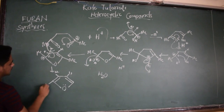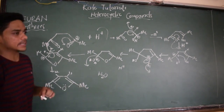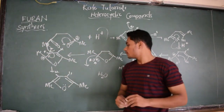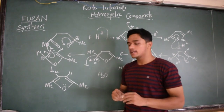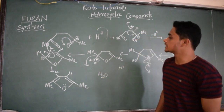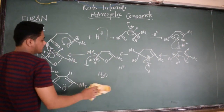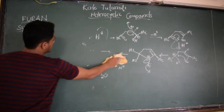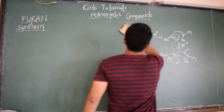It became neutral — oxygen, oxygen, oxygen — and this is the derivative of furan: 2,5-dimethylfuran. In this way we prepare furan by taking a 1,4-dicarbonyl compound in acidic medium. This is the synthesis of furan — one of the simplest. I have shown you the mechanism; if you didn't get it, please watch it again and practice.